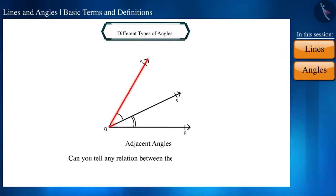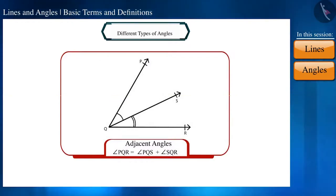Friends, by looking at the figure can you tell any relationship between angle PQS, angle SQR and angle PQR? Note, here angle PQR is formed by joining the angle PQS and angle SQR. That is, the sum of these two angles will be equal to this and we can write it like this.